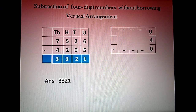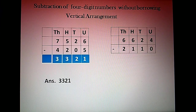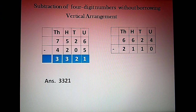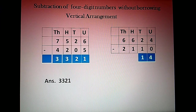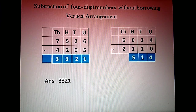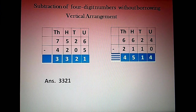We will see one more example: 6,624 minus 2,110. We arrange them according to their places and start from the units place. 4 minus 0 is 4. Tens place: 2 minus 1 is 1. Hundreds place: 6 minus 1 is 5. Thousands place: 6 minus 2 is 4. So our answer is 4,514.